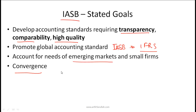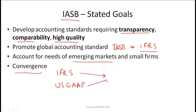Convergence refers to the convergence between IFRS and US GAAP. Both these entities are working towards a system so that the differences between these two standards are minimized. This is an ongoing activity.